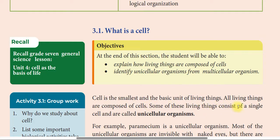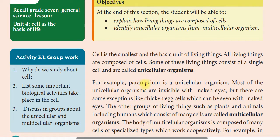Some living things consist of a single cell and are called unicellular organisms. For example, paramecium is a unicellular organism. Most unicellular organisms are invisible to the naked eye, but there are some exceptions, like the chicken egg cell, which can be seen with the naked eye.